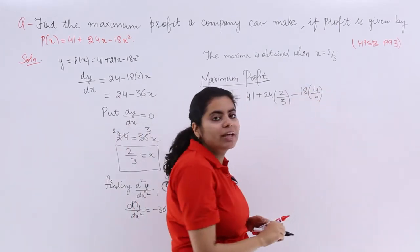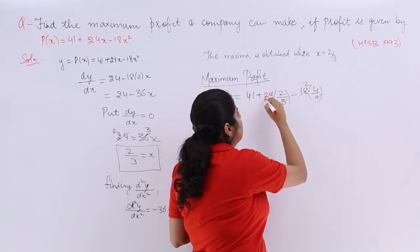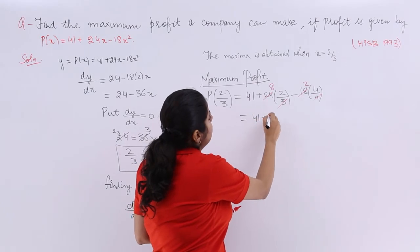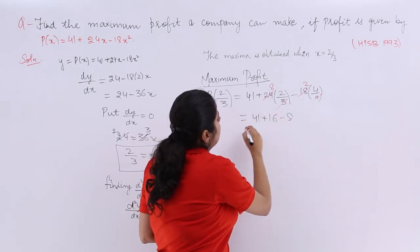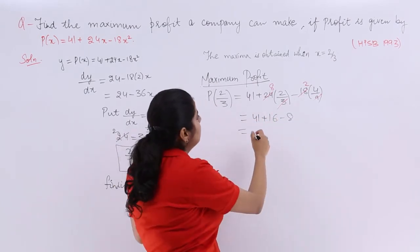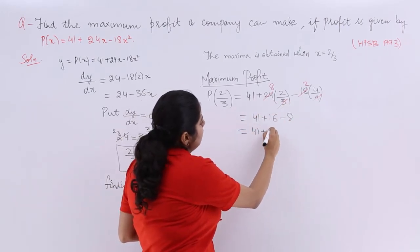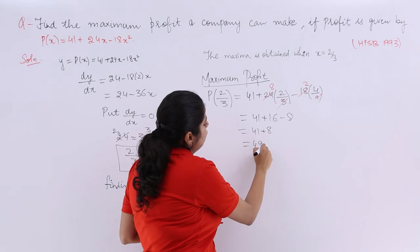Now cancel certain things: 9 ones are 9, twos are 3 ones are 3, eights are... so the answer is what? It is 41 + 16 - 8, or it is nothing but 41 + 8 which is 49.